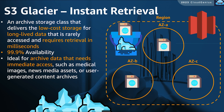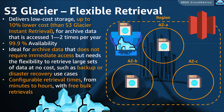Glacier Instant Retrieval is a low-cost storage class for archival data that might need to be retrieved immediately within milliseconds. Glacier Flexible Retrieval is cheaper than Glacier Instant Retrieval by nearly 10%. This would be ideal for your archives that don't need immediate access — the retrieval time needed can range from a couple of minutes to several hours.